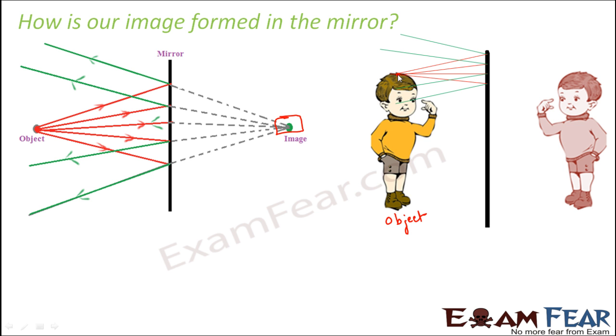In a very similar way, image is formed for any point of our body. So let's say the tip of your head - the rays fall on the mirror, they get reflected, the reflected rays appear to meet at a point behind the mirror, and that is where the image is formed.